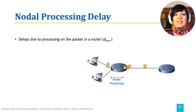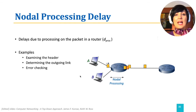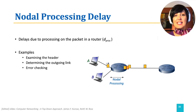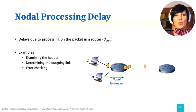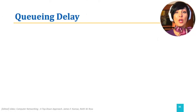Examples of nodal processing include examining the header of the packet to determine the outgoing link, or error checking to find out if the packet has experienced bit-level errors in the path from the source to this node. After nodal processing is finished, the packet is placed in the queue for the outgoing link.